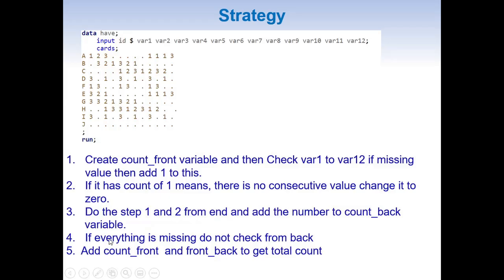Before solving any problem, as I always mention, it is very important to develop a strategy. The strategy here is straightforward: first, we create a variable count_front and start checking from the beginning. If we find a missing value we add one to the count. If we find a non-missing value we stop checking. If the count is only one, meaning no consecutive values, we change it to zero.